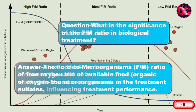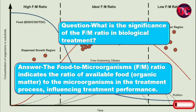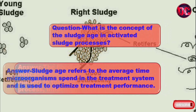Question: What is the significance of the F/M ratio in biological treatment? Answer: The food to microorganisms (F/M) ratio indicates the ratio of available food — organic matter — to the microorganisms in the treatment process, influencing treatment performance.